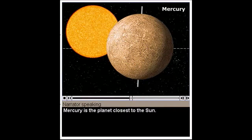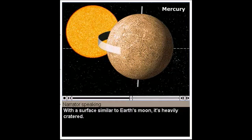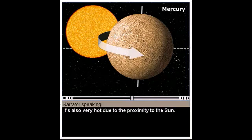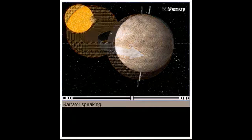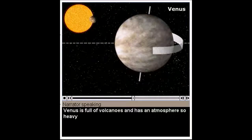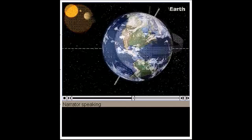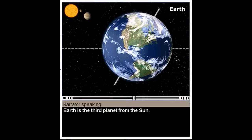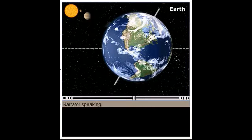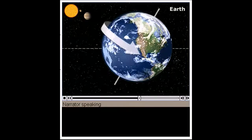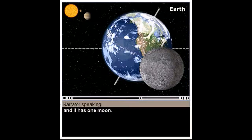Mercury is the planet closest to the sun. With a surface similar to Earth's moon, it's heavily cratered. It's also very hot due to the proximity to the sun. Venus is full of volcanoes and has an atmosphere so heavy it keeps the surface hot enough to melt lead. Earth is the third planet from the sun. It's the only planet with known life. It has more water on its surface than land. And it has one moon.